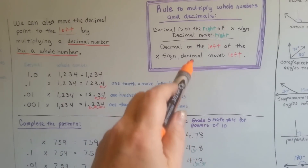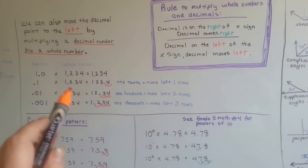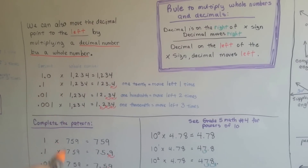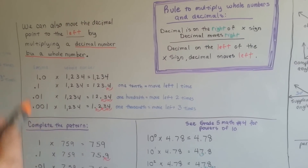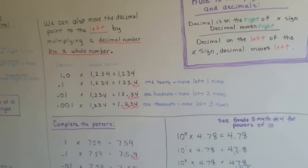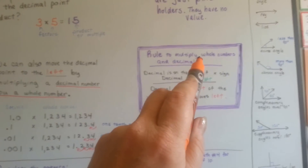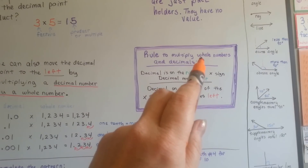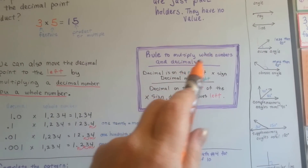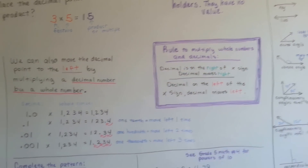And if the decimal is on the left of the multiplication sign — like here — it's on the left-hand side of the multiplication sign, then the decimal is going to move left. Just remember, I'm not talking about multiplying decimals by decimals or whole numbers by whole numbers. This is only when you are multiplying decimals by whole numbers or whole numbers by decimals.